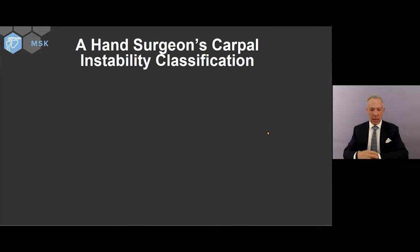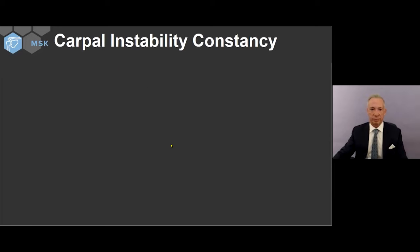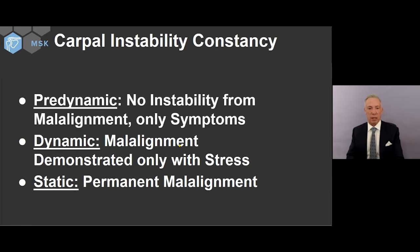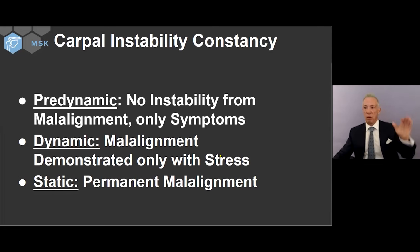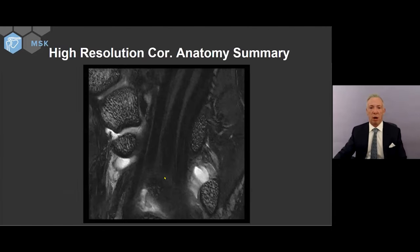Let's turn our attention to instability. The hand surgeon's classification: acute is less than a week, subacute is one to six weeks, and chronic is greater than six weeks. Then there's constancy: pre-dynamic — no instability or malalignment on imaging, only symptoms; dynamic — malalignment is only demonstrated with stress views such as radial deviation, ulnar deviation, pronation, supination, and clenched fist view; and static — permanent malalignment seen in the neutral position on a standard MRI.